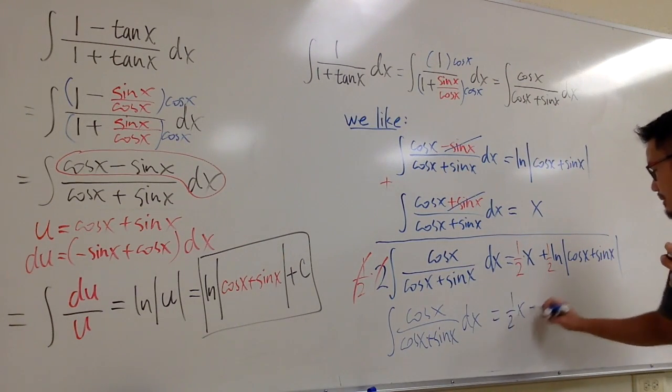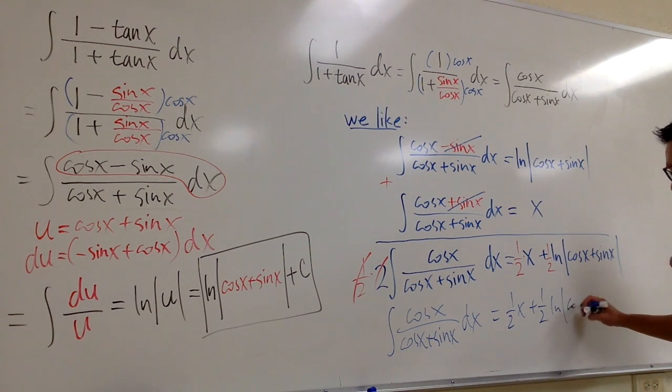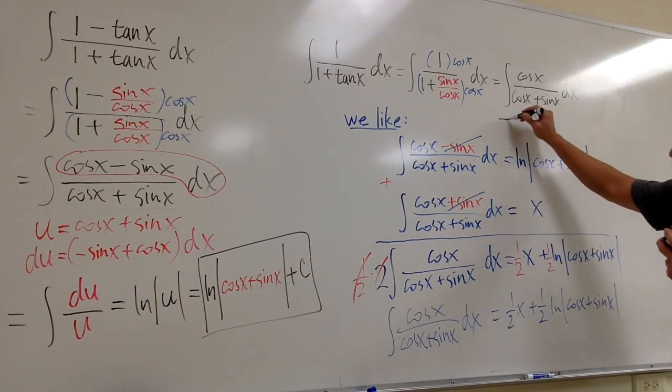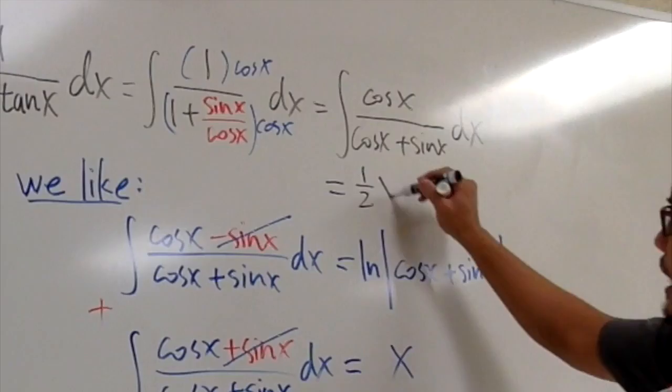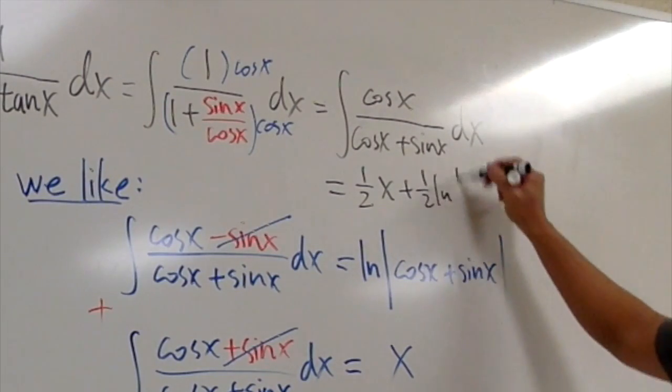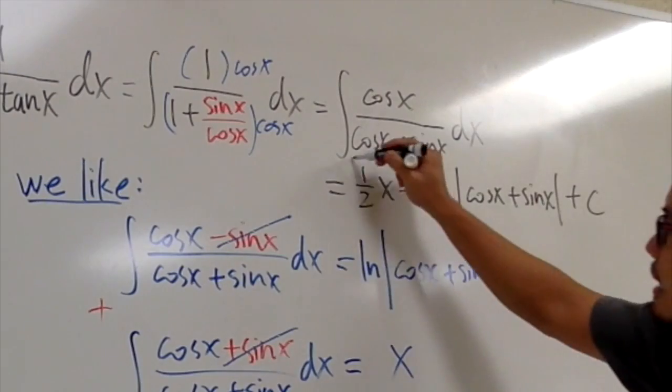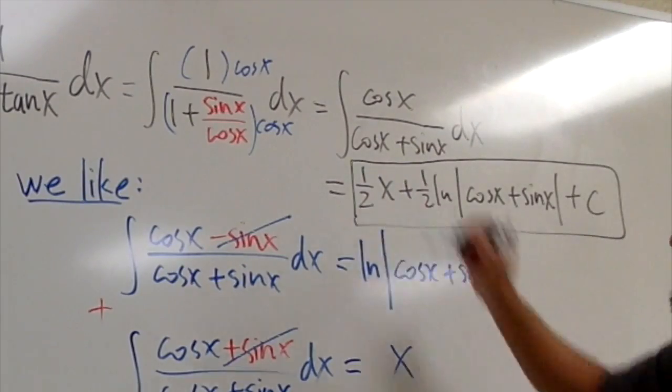Cos x over cos x plus sin x dx, which is just 1 half x plus 1 half ln absolute value cos x plus sin x. And then we are done. And then we are just ready here. So the answer to this, which is just that, I'm just copying it down one more time. 1 half times x plus 1 half ln absolute value cos x plus sin x. And we are so done right here. C at the end and box here for the answer.